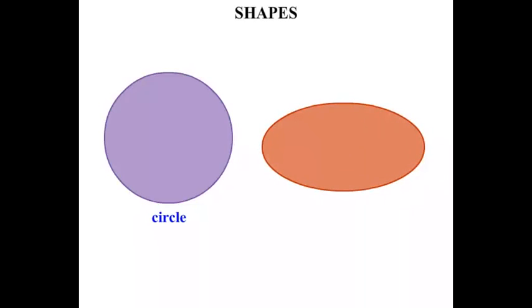And this one, a squashed circle if you like, is known as an oval, and sometimes referred to as an ellipse.